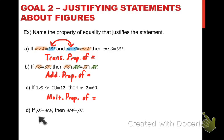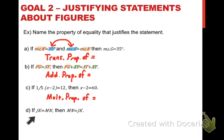The final example in this set: if JK equals MN — the distance from J to K equals the distance from M to N — then MN equals JK. Notice all we did is take the quantity on the left side and the right side and switch which side they were on. Which property allows you to switch which side two equal expressions are on in an equation? That's the symmetric property of equality.